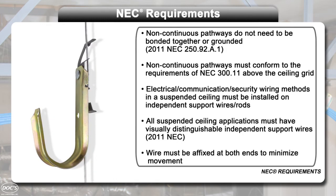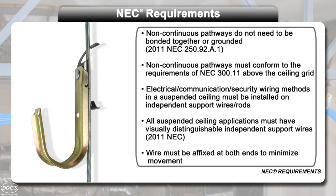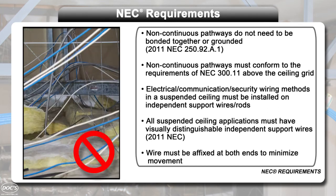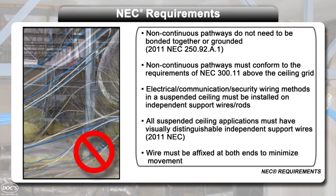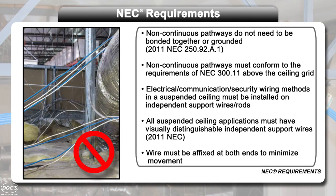NEC has several requirements for the proper installation of J-hooks. For example, J-hooks should be installed on clearly identifiable independent sealing wires or rods that are affixed at both ends. Also, cables should never be allowed to lay directly on ceiling tiles or rails.